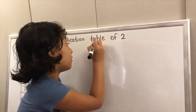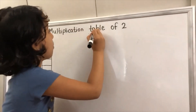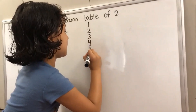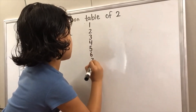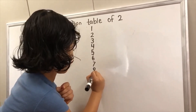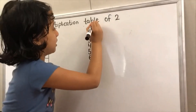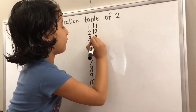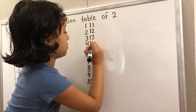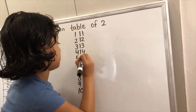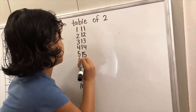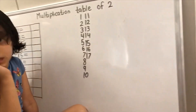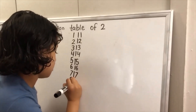So, we go right: 1, 2, 3, 4, 5, 6, 7, 8, 9, 10, 11, 12, 13, 14, 15, 16, 17, 18, 19, 20.